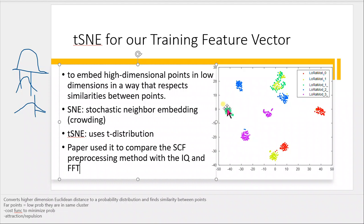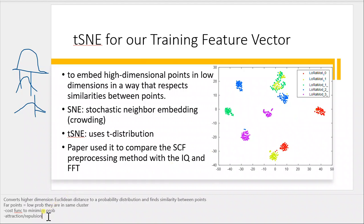We want to minimize the probability between clusters, meaning we want this cluster to be far from that cluster. For far-apart points, there is a low probability they are from the same cluster. We try to minimize this probability to achieve more accurate clustering. The cost function is used to minimize the probability, while attraction and repulsion handle similarity between points.